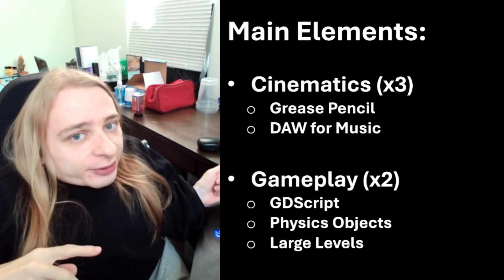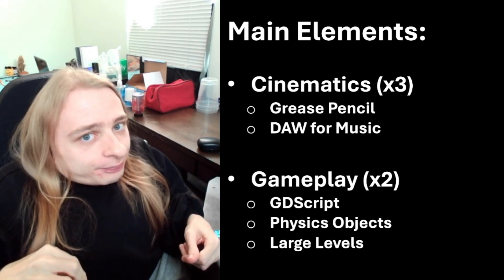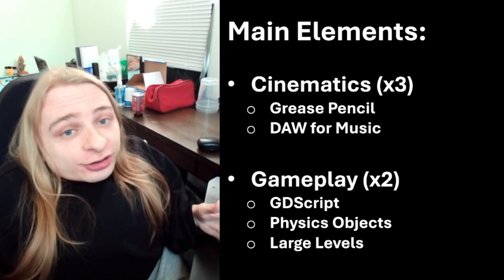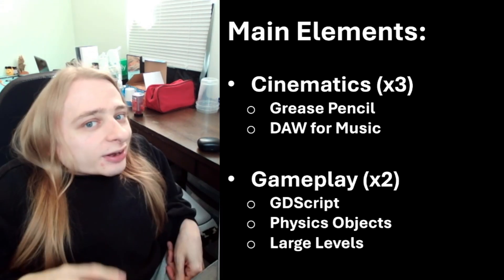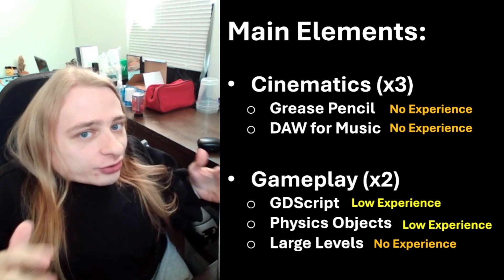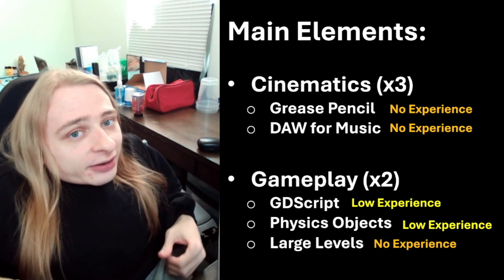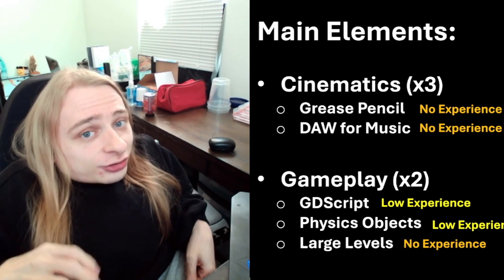The current skills factor describes everything you have to learn in order to make your game. To estimate it, we go through those main elements we already determined and see — for each one — have you done it before? Is it completely new to you? Or is it somewhere in between? In my game, I have no experience in grease pencil, the medium I want to use to make my storybook cinematics. Additionally, I've never made large levels in Godot before. So in short, this factor says: learning takes time, so it's included in the scope.